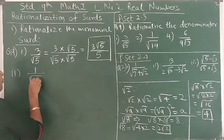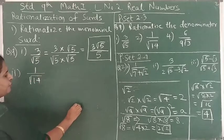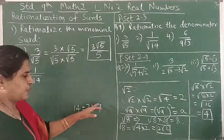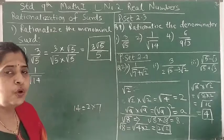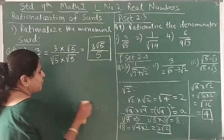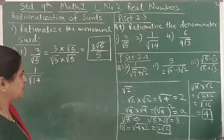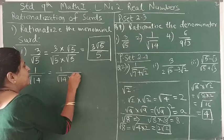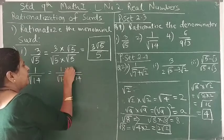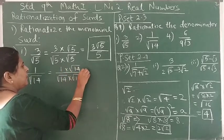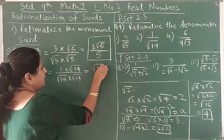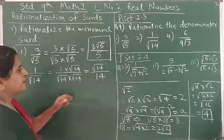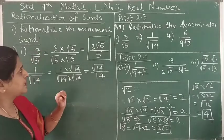The second part is 1 upon square root of 14. What are the factors of 14? They are 2 and 7. Neither 2 nor 7 is a perfect square, so we keep it as is and multiply both numerator and denominator by square root of 14. So 1 into square root of 14 gives square root of 14, and square root of 14 times square root of 14 becomes 14. So the answer is square root of 14 upon 14.